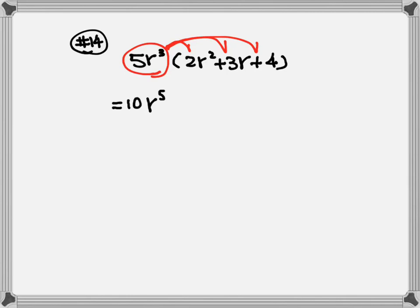Then next, 5 times 3 will be plus 15. R times r — write down one r — 3 and 1 (you don't see any exponent written, that's 1), so 3 plus 1 is 4, giving r to the 4th. Then after that, 5 times 4 will be plus 20, and keep the r to the third power.